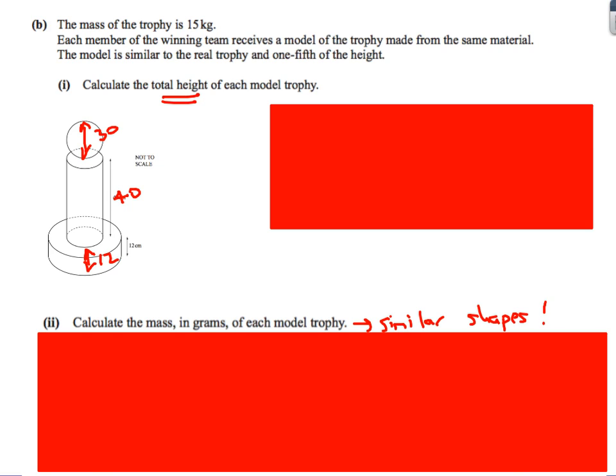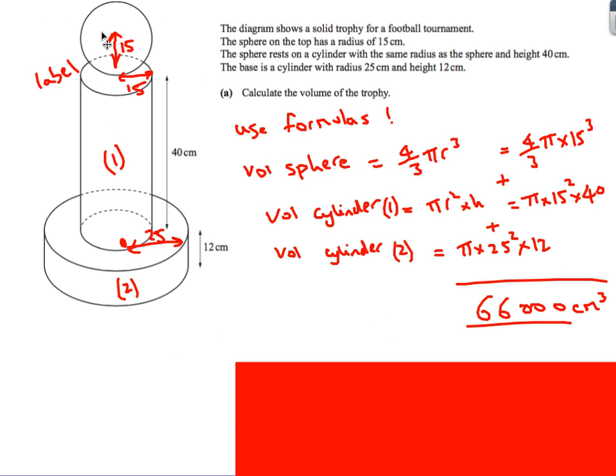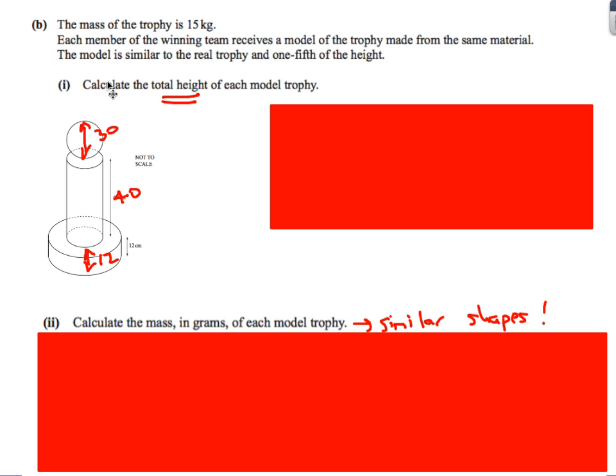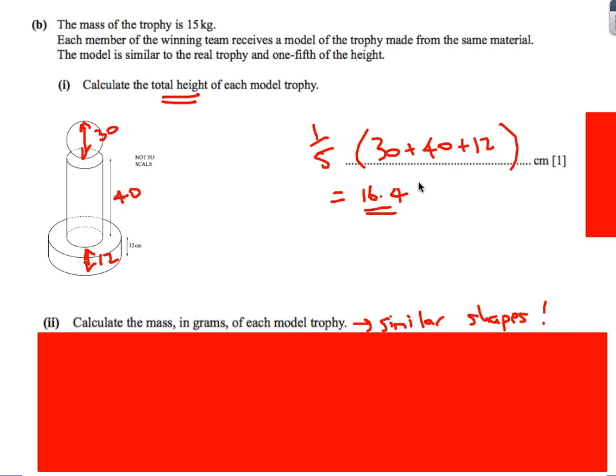Part B. Calculate the total height of each model trophy. We'll just kind of carry on from the previous question. If we know that this radius here is 15, then the total diameter is going to be 30. We already know that that is 40. We know that is 12. So therefore, we just add them together. That's the total height of the real trophy. But here we go. The model is similar and one-fifth of the height. So the real height of the trophy, we just add them together. But we then divide it by 5 to find the height of the model, which is 16.4.